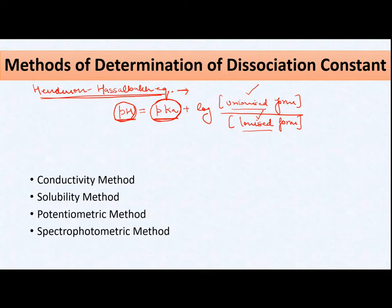For computing pKa, if I list the methods, there are four different methods: first is the conductivity method, second is the solubility method, third is the potentiometric method, and fourth is the spectrophotometric method. All these methods help us compute pKa by measuring the concentration of the ionized and unionized form of either an acid or a base.